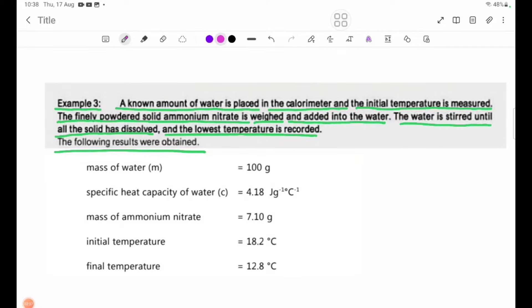Given data: mass of water is 100 grams, specific heat capacity of water is 4.18 joules per gram per degree Celsius, mass of ammonium nitrate is 7.10 grams, initial temperature is 18.2 degrees Celsius, and final temperature is 12.8 degrees Celsius.